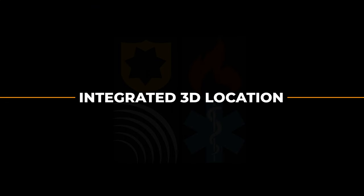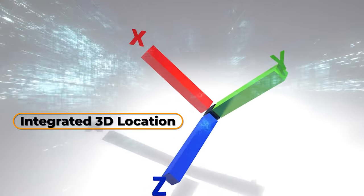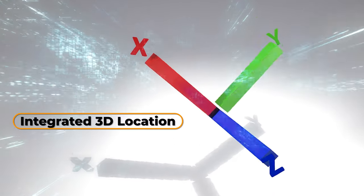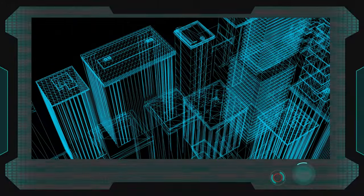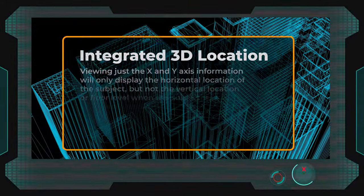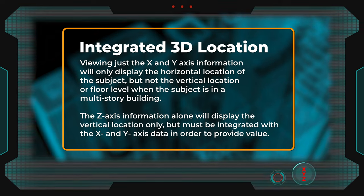Integrated 3D Location refers to a comprehensive X, Y, and Z-axis location fix displayed on a mapping interface for easy consumption by users viewing the information.